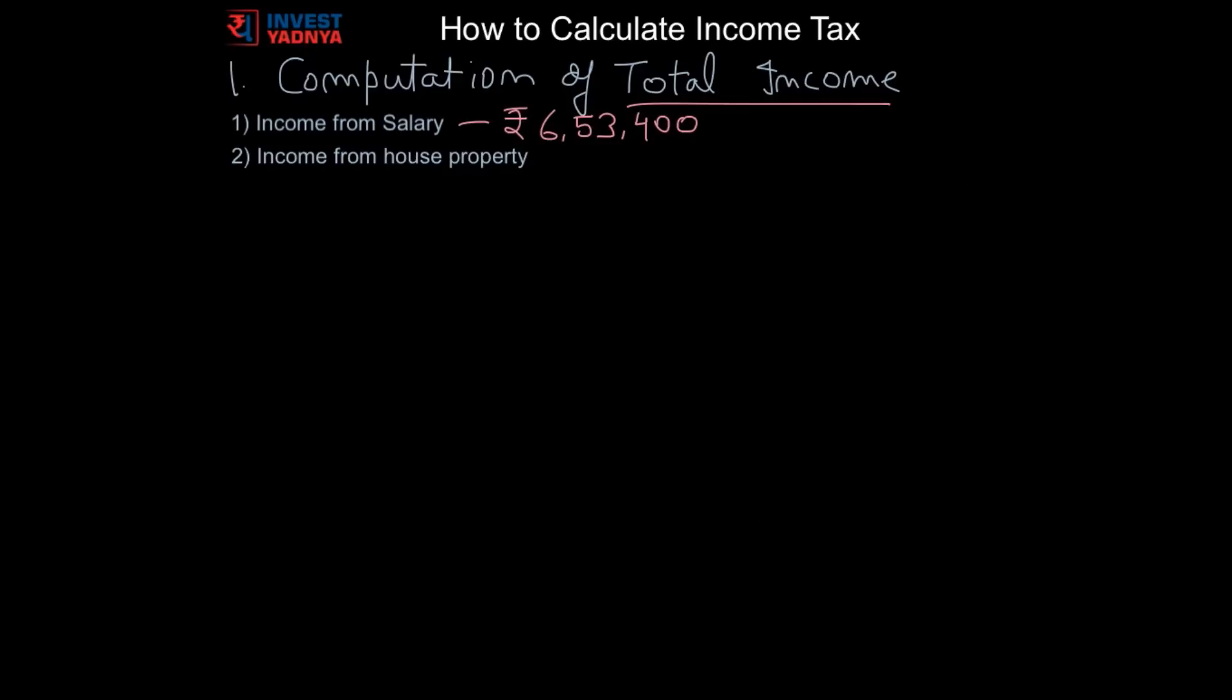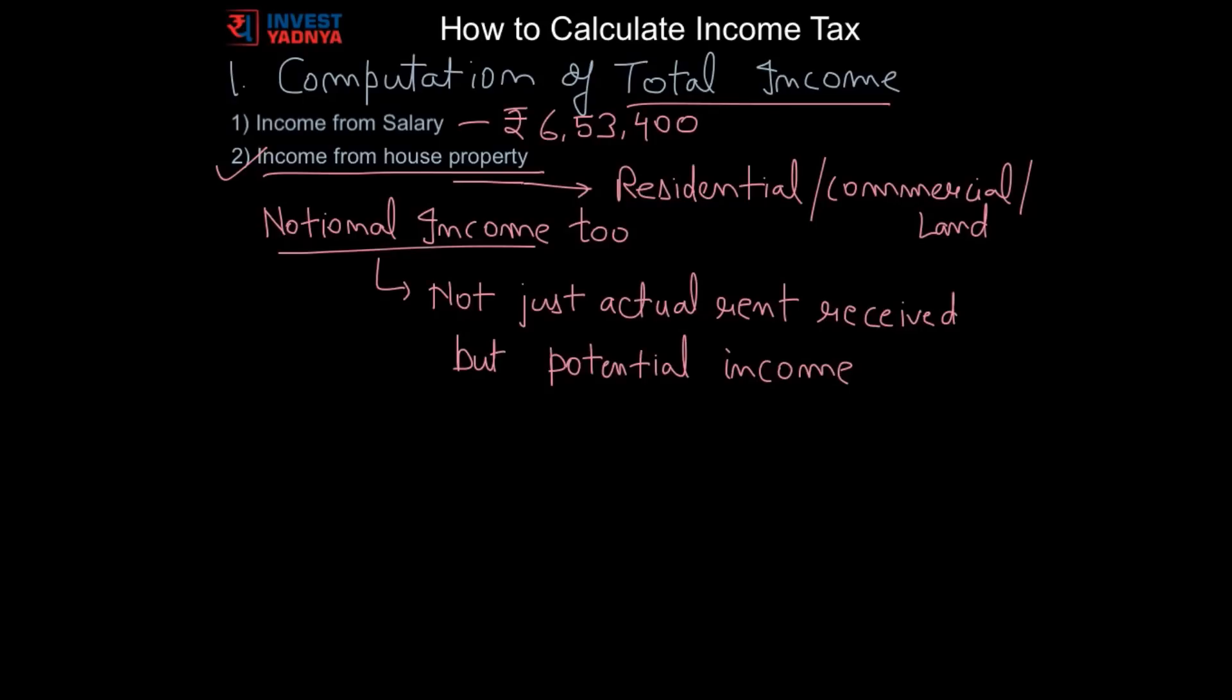Now let's talk about second source of income head, that is from house property. Income from house property constitutes the income earned from a property by its owner. Property hereby refers to any residential or commercial building or land attached. This head of income taxes notional income too. The taxability may not necessarily be the actual rent received but the potential income which the property is capable of yielding. This is a complicated topic and we are working on a separate video on this. Let's understand here with one simpler scenario.